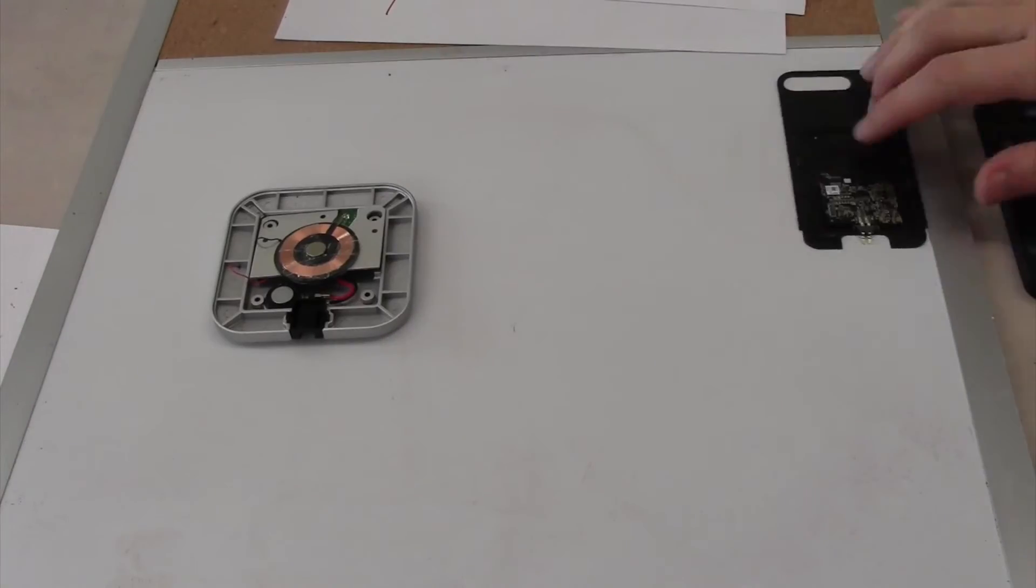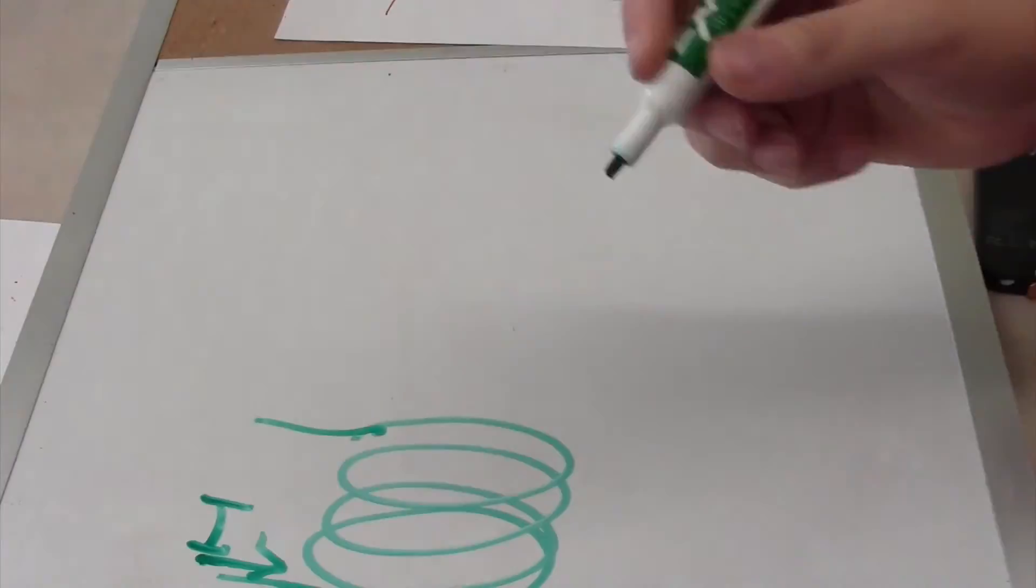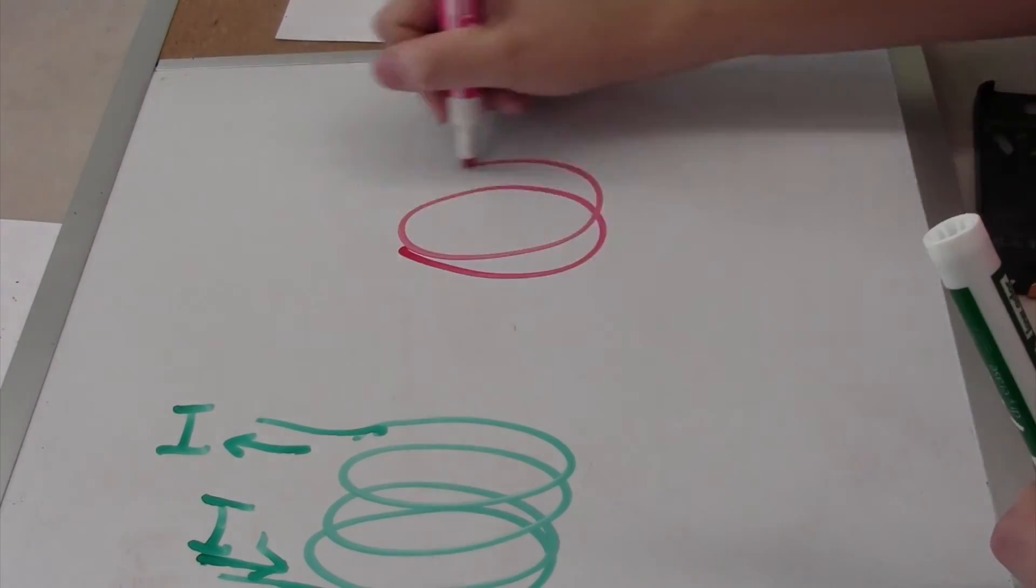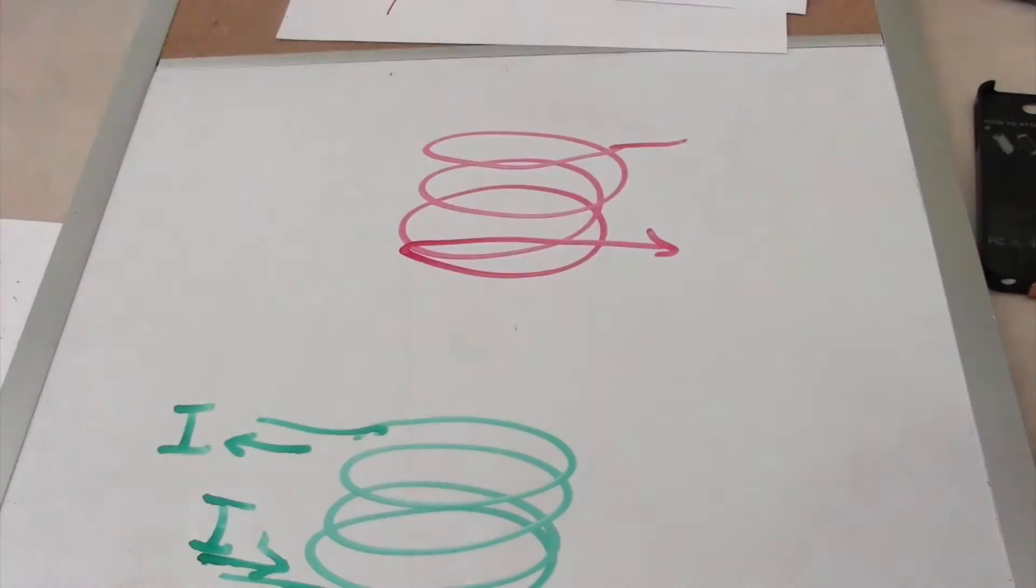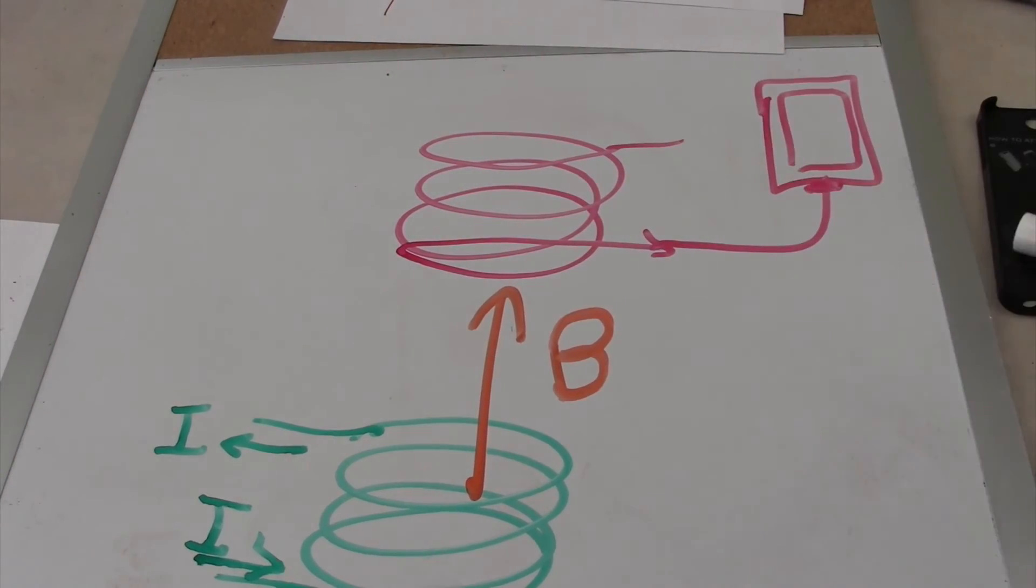This concept explains how the power mat and wireless charging work. When we look inside of the power mat and case, we see that they're both coils of wire. The mat sends a changing magnetic field through the coil in the phone case, which induces a current that then charges the phone.